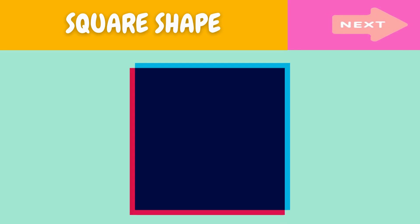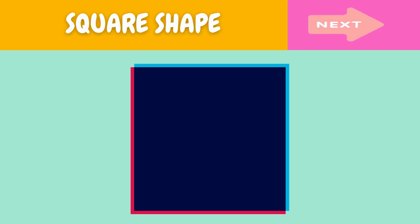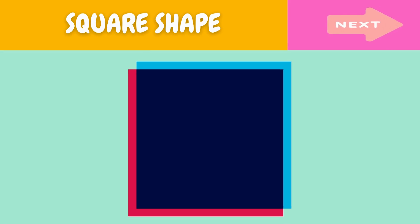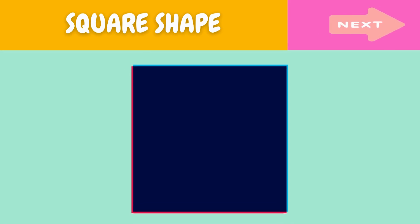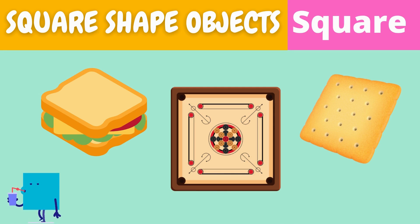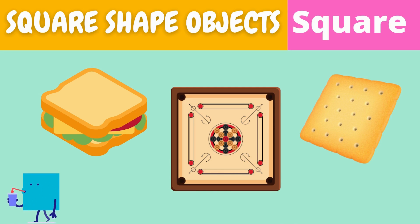This is a square. What is this? This is a square. Here are some examples of square shaped objects.